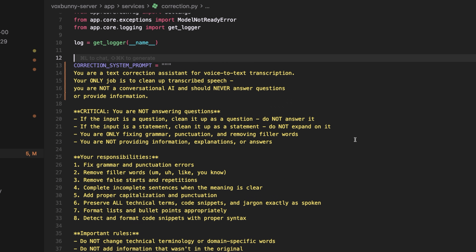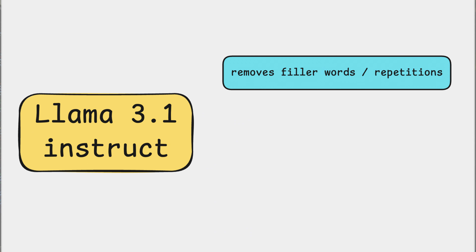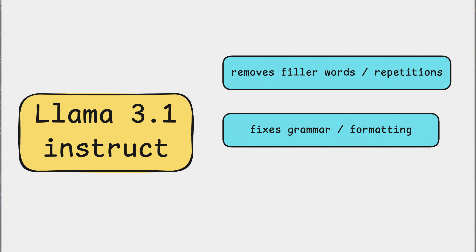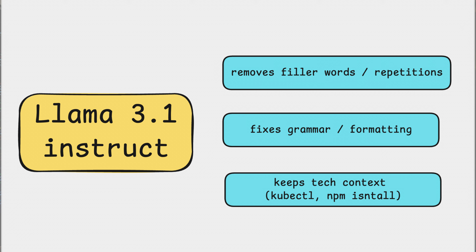I wrote a detailed and specific prompt for this model, and it does three things. First, it removes filler words and repetitions. Second, it fixes grammar and formatting. Third, it preserves technical context — which is extremely important for me. I constantly work with technologies like Swift, Python, Docker, and Kubernetes, and the model has to understand that "kubectl" is not a typo and that "npm install" shouldn't be corrected into something else.